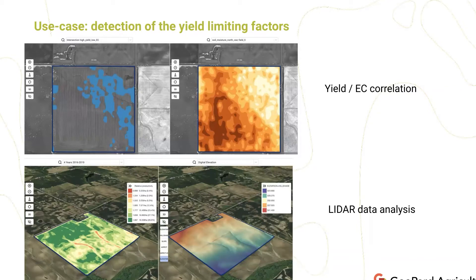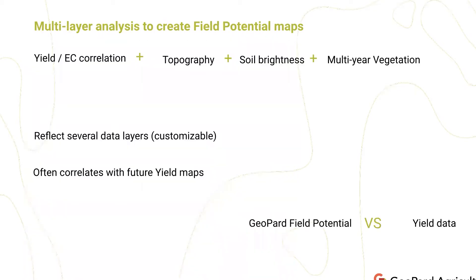You can do this analysis directly in the software. Here's an example showing an intersection of high yield and low EC data. You can also see that in some cases topography is very important — if you have LIDAR data, there is often a correlation between your topography and your field potential.